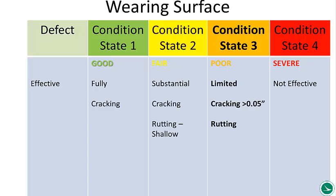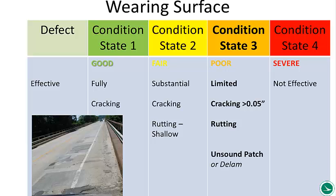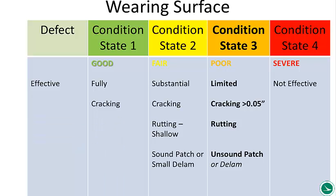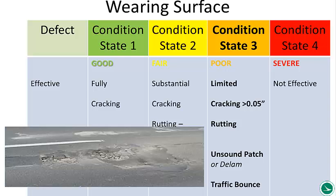Rutting at state 3; shallow rutting at state 2. Shallow is something less than 1 inch. Delaminations or an unsound patch would be condition state 3 — if that delamination or patch is getting worse and worse, state 3 is where it should start. A sound patch or small delamination is state 2. If there's substantial traffic bouncing or traffic that has to swerve to miss something, that would be condition state 4 — that rectangular area, that square footage.